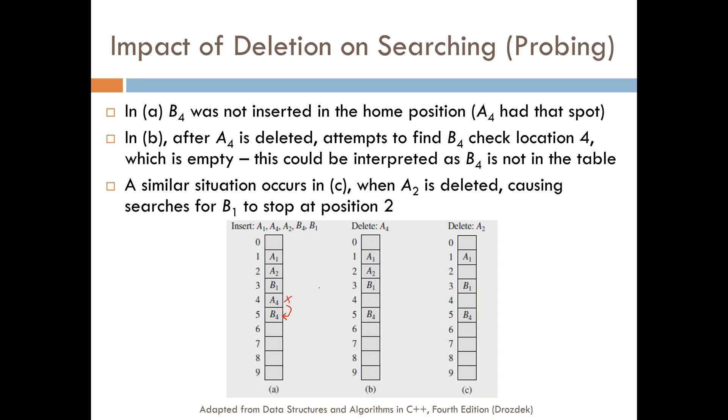Now, subsequently, A4 was deleted from the table. And so now an attempt to find B4 hashes into B4's location and finds that it's empty and reports back that B4 is not found. And that's in fact not the case because B4 is right here.